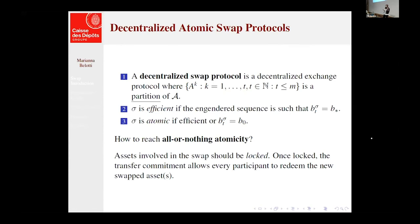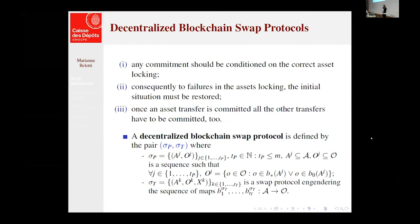Then we have to take the swap protocol and contextualize it in the blockchain system. And of course, we have to deal with the problem of all-or-nothing atomicity. What we want to have is that any commitment, so any actual transfer of the property of an object, should be conditioned on the current asset locking. So we need to lock the asset before transferring the ownership, because we want to preserve this all-or-nothing atomicity property. And what it says is that, consequently, to failures in the asset locking, the initial situation must be restored. And once an asset transfer is committed, all the other transfers are committed too.